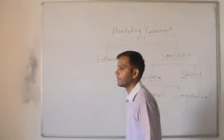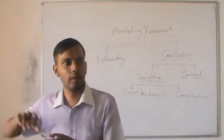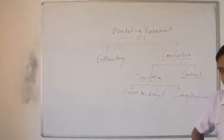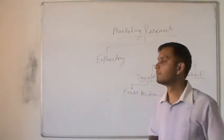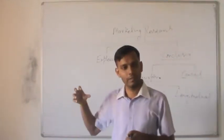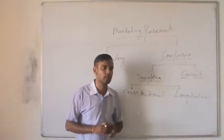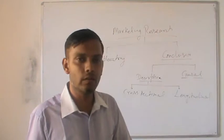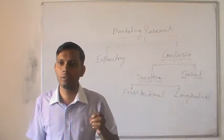Cross-sectional design means you take a sample from a specified population, cross-section that population, and the demographic diversity of that population remains intact with the sample. Longitudinal is similar, but you identify the sample from a given population and try to do a long-term study — a study that continues for three or four years — with the objective of concluding results based on longitudinal and temporal data.